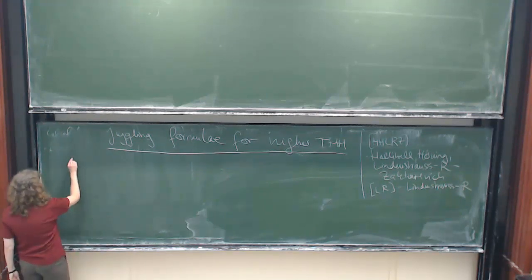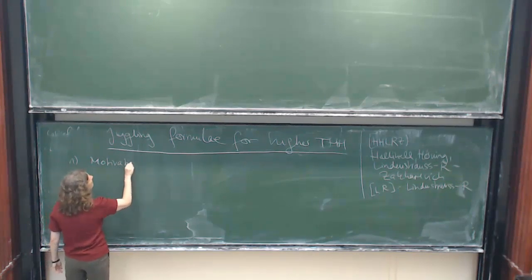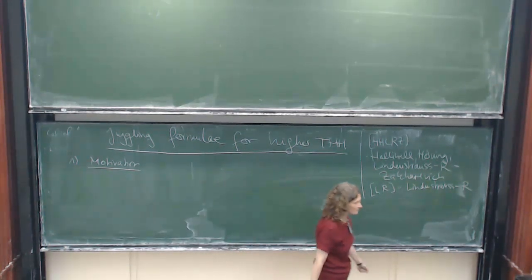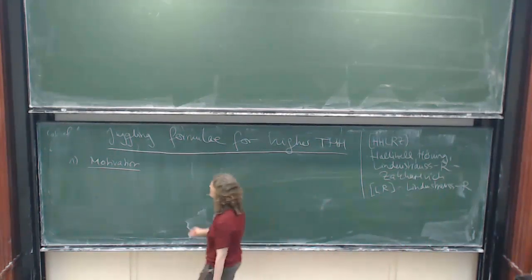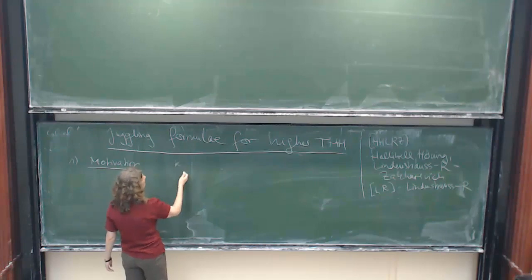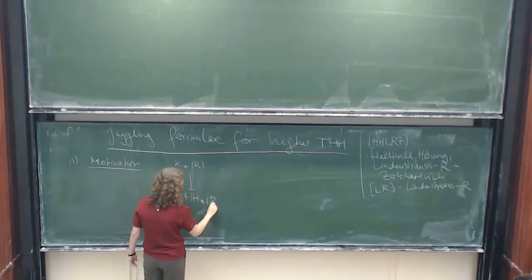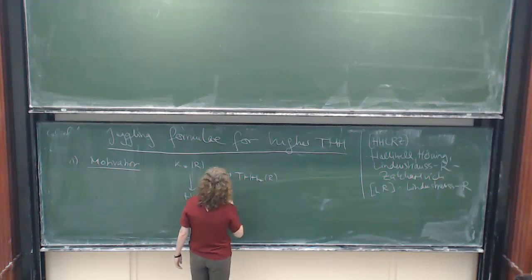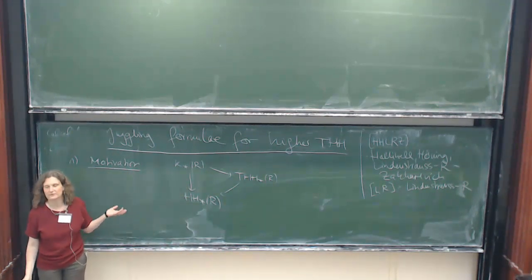First of all, let me start with something that might motivate you for listening. We all know the trace maps to Hochschild homology and we know that's pretty lousy. So if we want to understand K-theory, then going to Hochschild homology is usually a bad idea, so you might factor over what's called topological Hochschild homology and that's a better approximation.